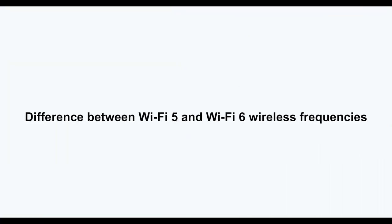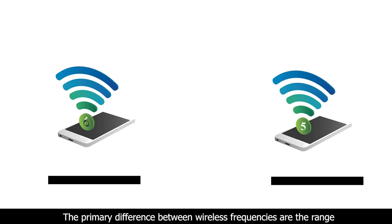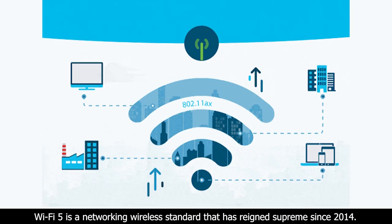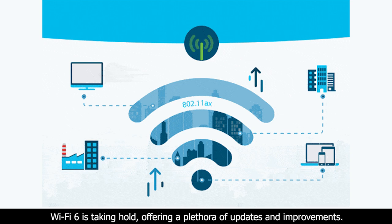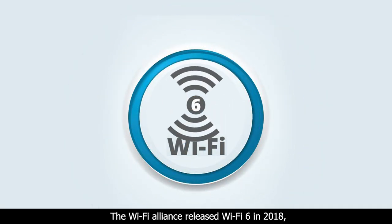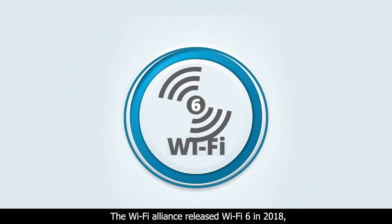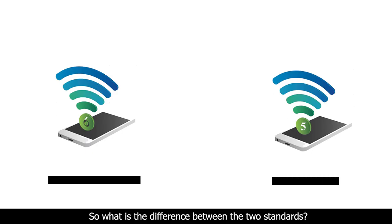The primary differences between wireless frequencies are the range and bandwidth that the bands provide. Wi-Fi 5 is a networking wireless standard that has reigned supreme since 2014, and while many organizations still have networks built around the standard, Wi-Fi 6 is taking hold, offering a range of updates and improvements. The Wi-Fi Alliance released Wi-Fi 6 in 2018, with vendors announcing Wi-Fi 6 products soon thereafter.